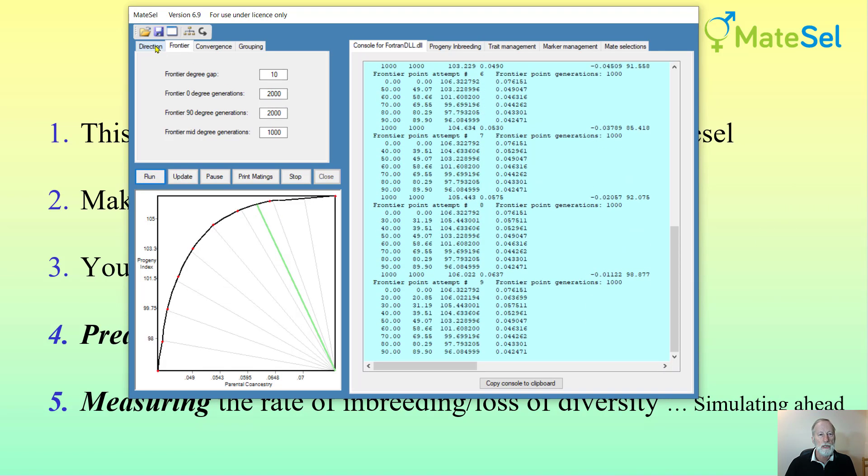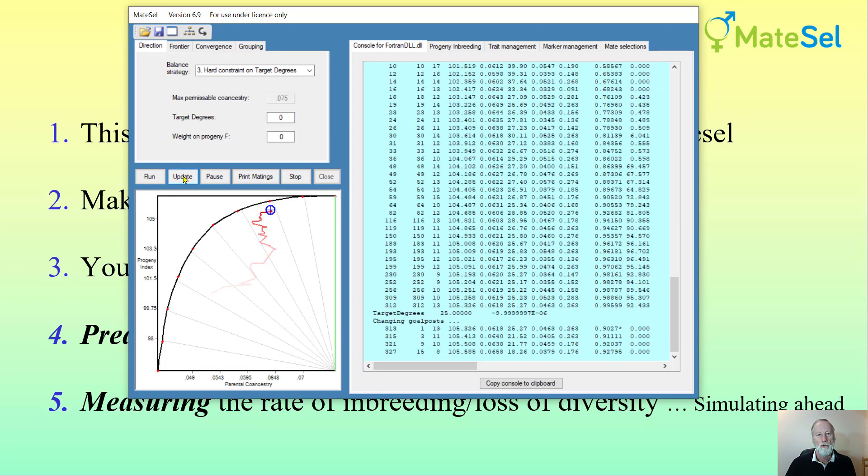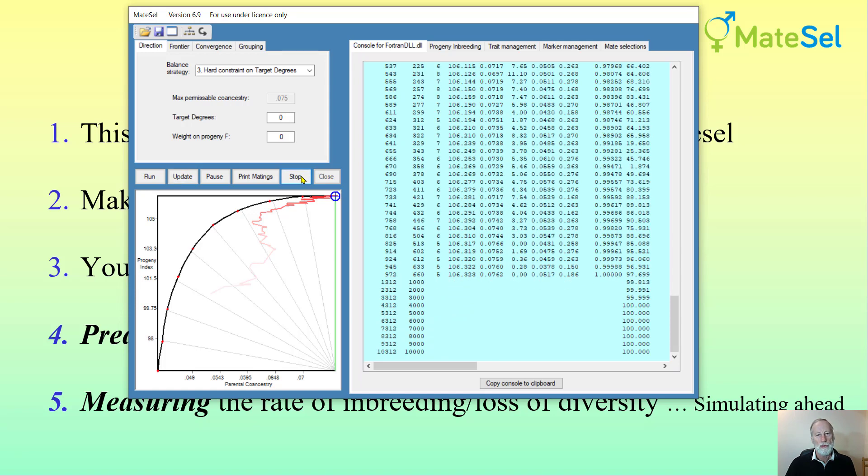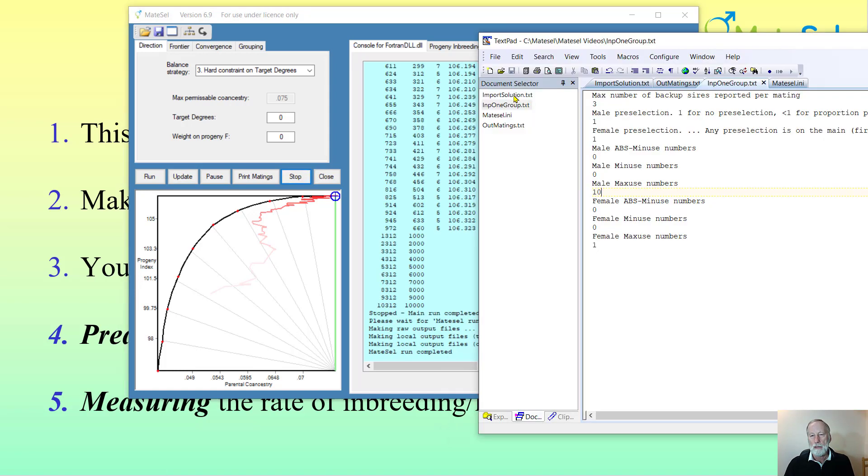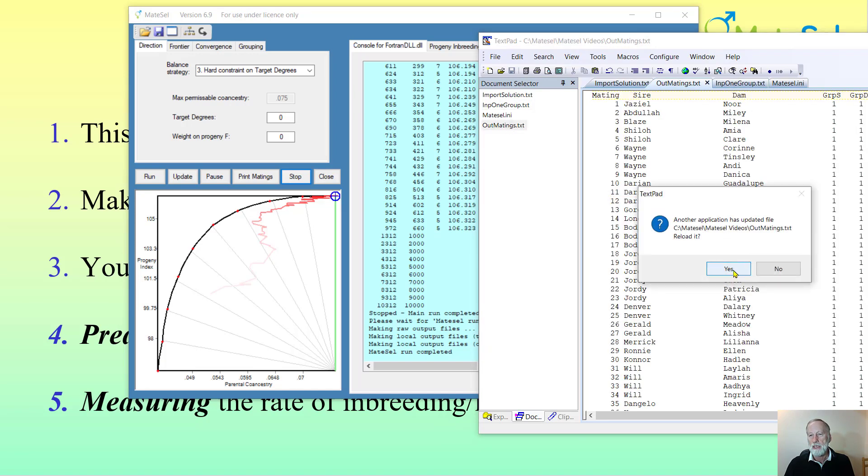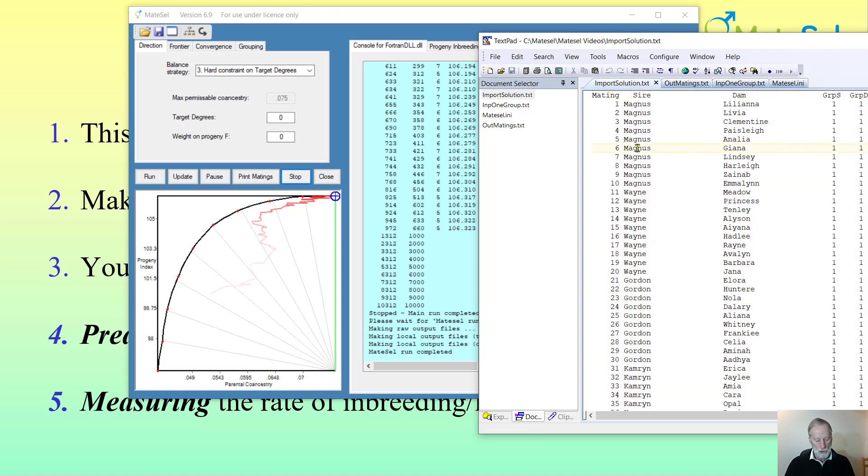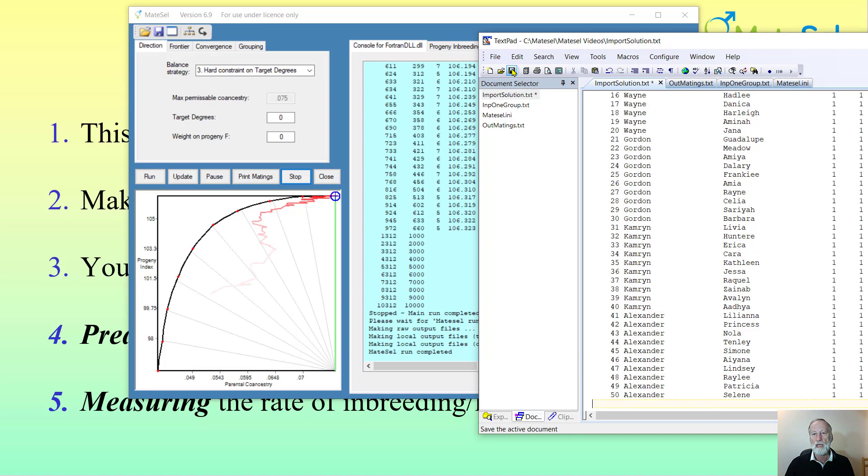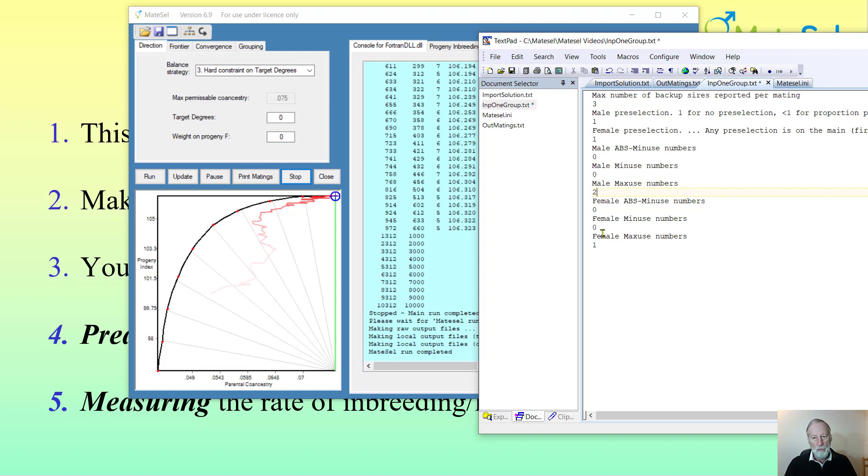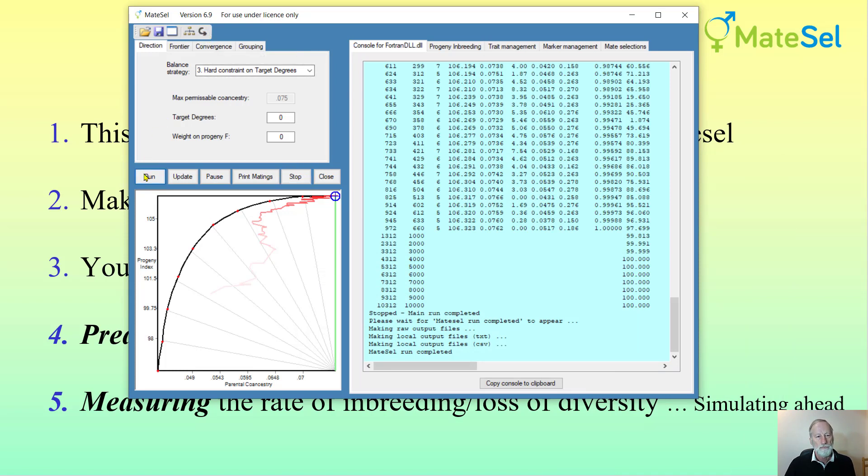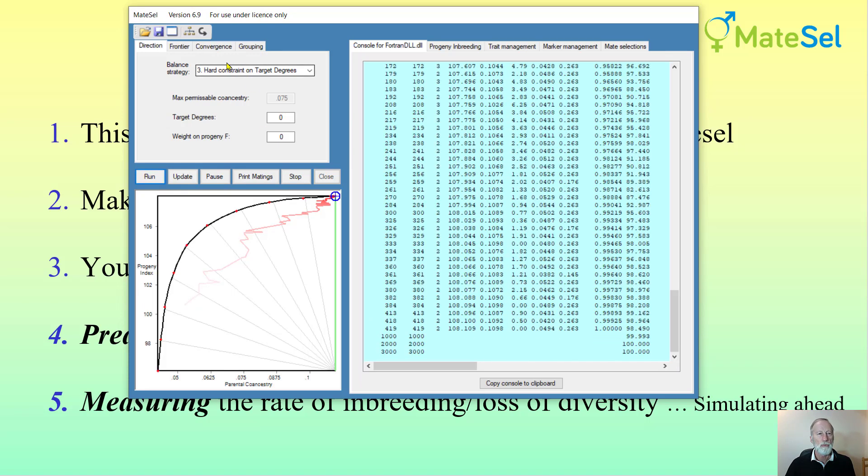I'm going to set the direction to zero degrees for maximum genetic gain. I'm going to stop the run and look at outmatings.txt, the new mating list. I'll copy all that and go to the file called import solution and replace the information there and save it. So I've saved this solution in import solution.txt.